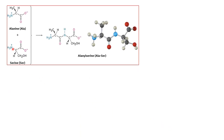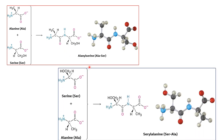To further illustrate: if the N-terminal amino acid is serine and the C-terminal is alanine, then that is an entirely different dipeptide. In this case, serine has the N-terminal end and alanine has the C-terminal end, so the nomenclature is seryl alanine. This is how peptide nomenclature is followed per IUPAC and International Union of Biochemistry conventions.